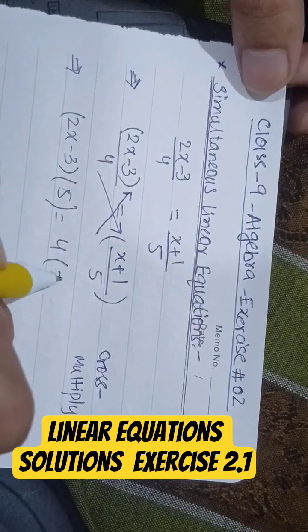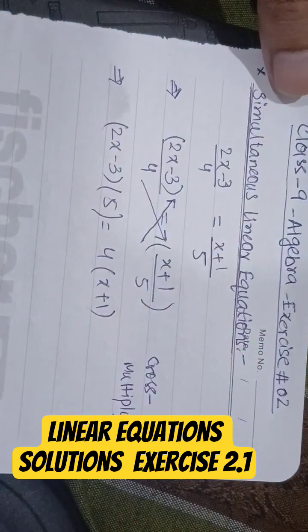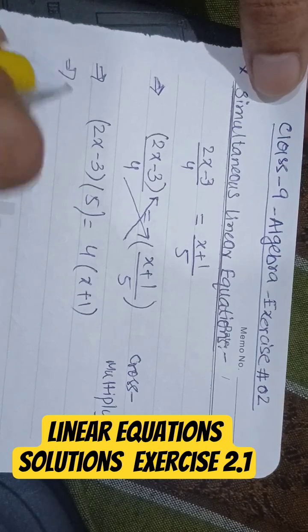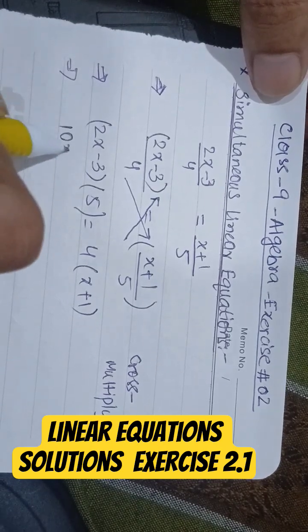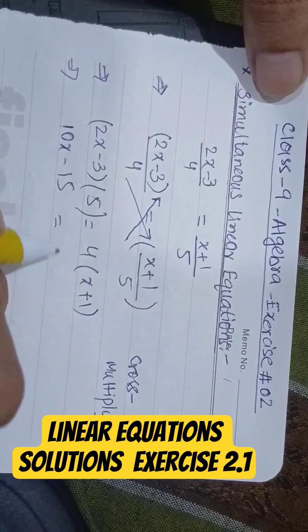The remaining process is the same. This will become 10x minus 15, and this will become 4x plus 4.